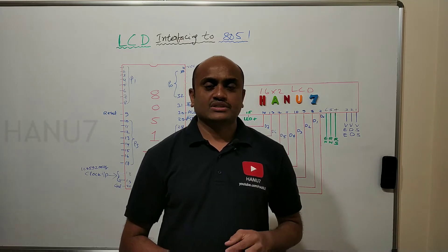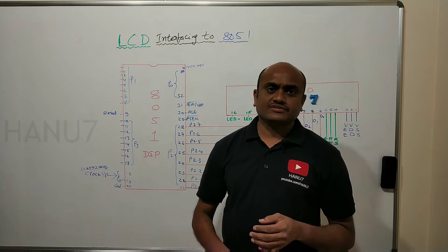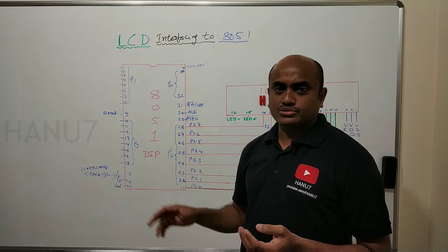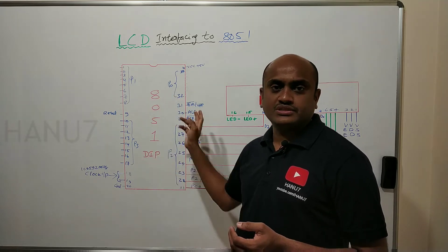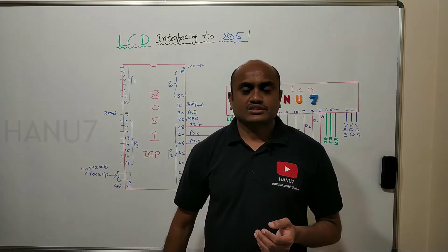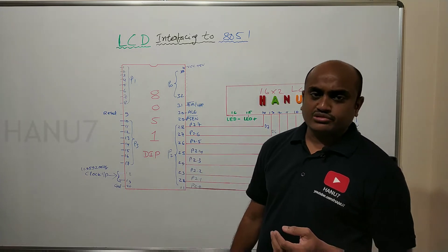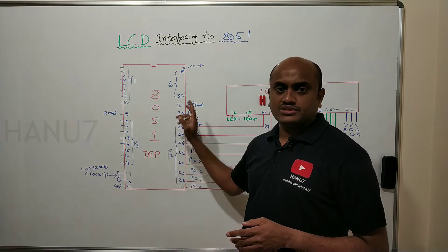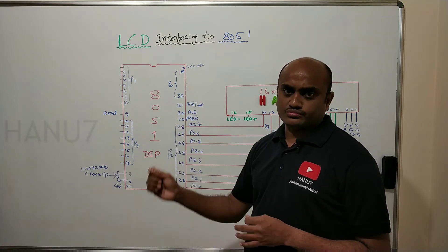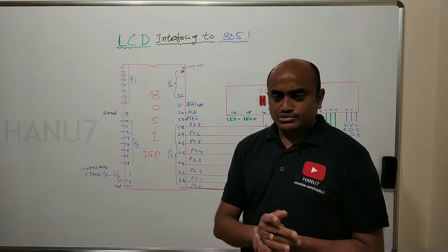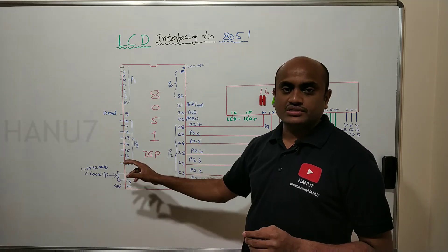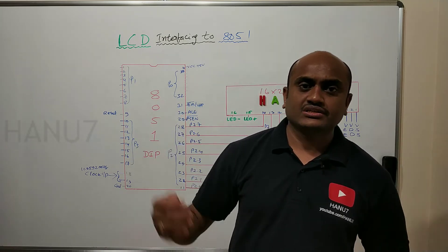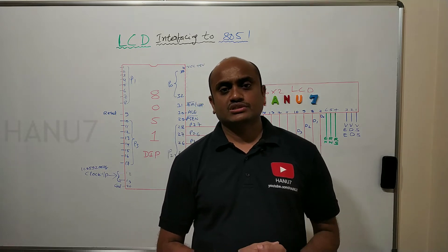Before that, let us have a quick recap of what the 8051 is. The 8051 has four ports — these four ports are 32 input/output lines, configured as port 0, port 1, port 2, and port 3. I am going to use these ports to interface our LCD, and because LCD is an output device I can use any of these four ports to interface it.